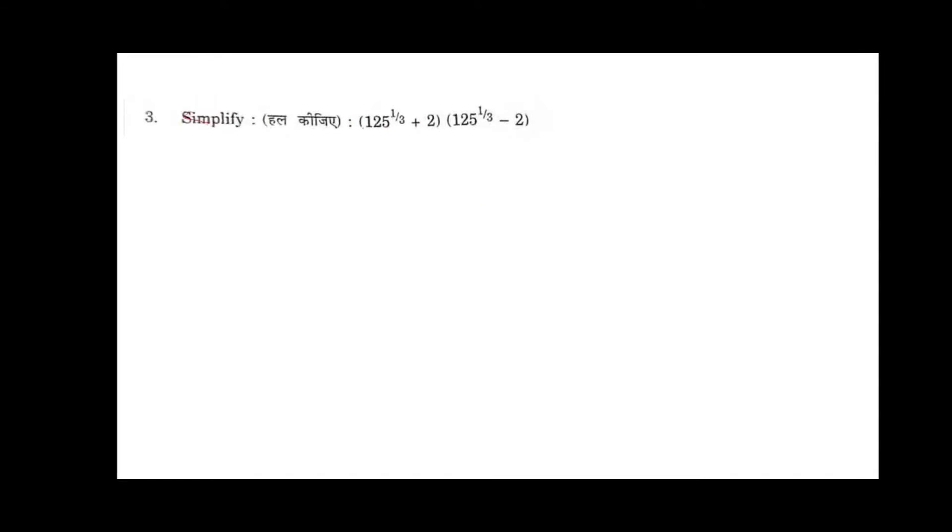Simplify 125 power 1 by 3 plus 2 times 125 power 1 by 3 minus 2. This looks like x plus a into x minus a, which we can write as a square minus b square identity.